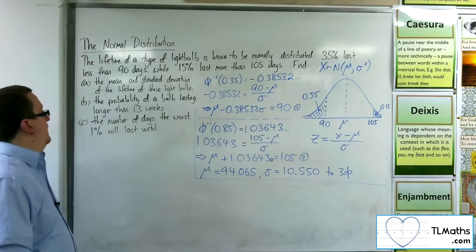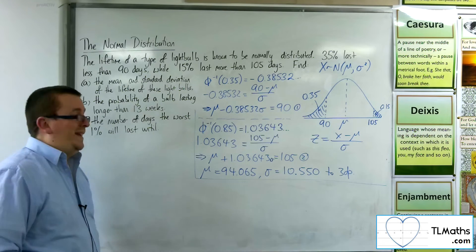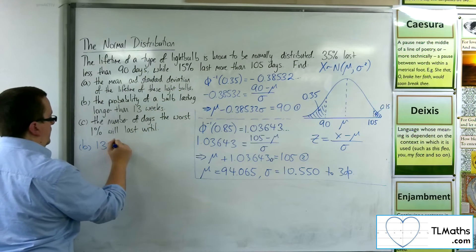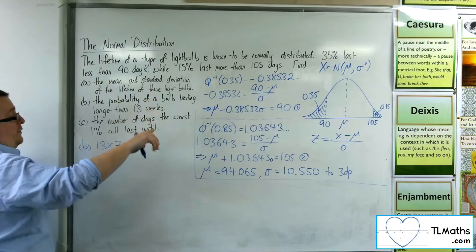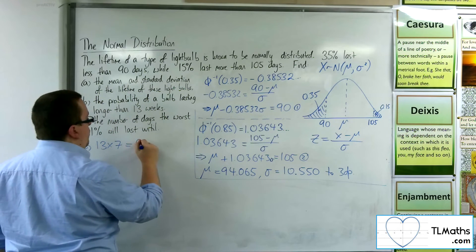So now I can find the probability of a light bulb lasting longer than 13 weeks. So 13 weeks, because everything else is in days. So 13 lots of 7 is 91 days.